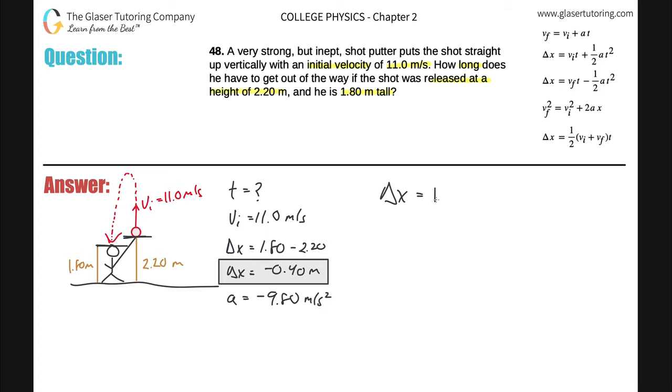Now we can solve. I can use equation number two because I know everything except one variable. The displacement is going to be equal to the initial velocity times time plus one half times the acceleration times time squared. So the displacement is negative 0.4, the initial velocity was 11 meters per second, the time is unknown, the acceleration is negative 9.80, and again time squared.